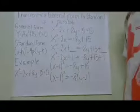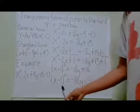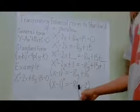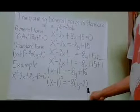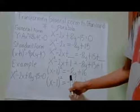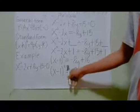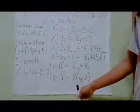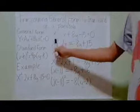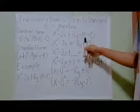For last step, common factor. First let us copy the left side, which is quantity x minus 1 square equals negative 8, parenthesis, y minus 2, because 16 divided by negative 8 is negative 2. So quantity x minus 1 square equals negative 8, quantity y minus 2 is the standard form of x squared minus 2x plus 8y minus 15 equals 0.